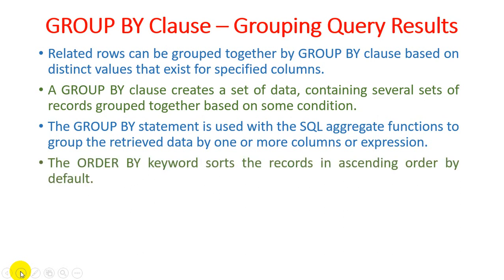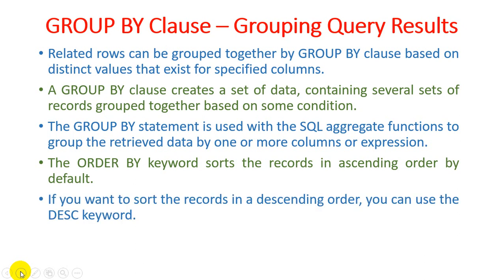The ORDER BY keyword sorts records in ascending order by default. We discussed previously that ORDER BY is used for output data sorting. By default, ORDER BY sorts the output in ascending order. If the user requires descending order, the DESC keyword is used with the ORDER BY keyword.